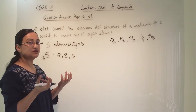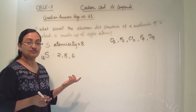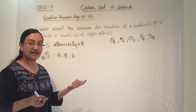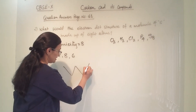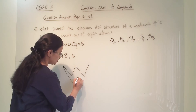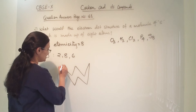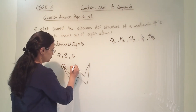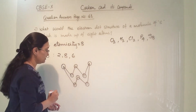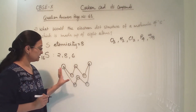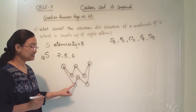So when sulphur attaches with another sulphur atom, it will share 2 electrons. When sulphur shares 2 electrons with another sulphur atom, it forms a crown-like structure. At every corner of this crown-like structure, there is one sulphur atom — 1, 2, 3, 4, 5, 6, 7, and 8. You have to remember this crown-like structure with sulphur atoms placed at each corner.